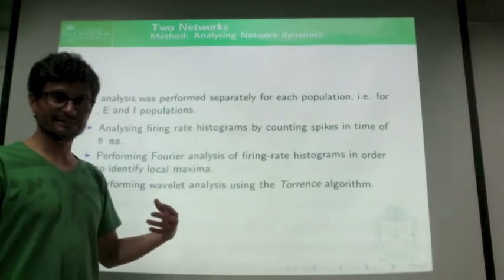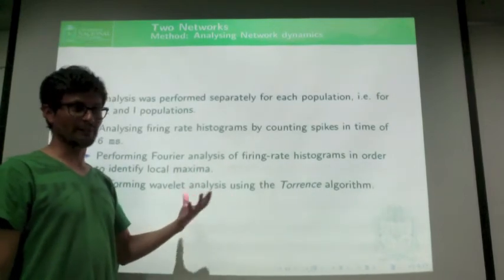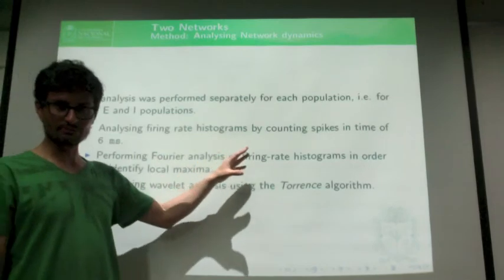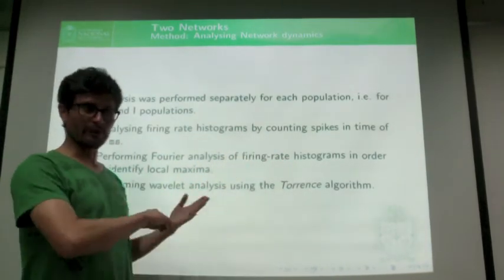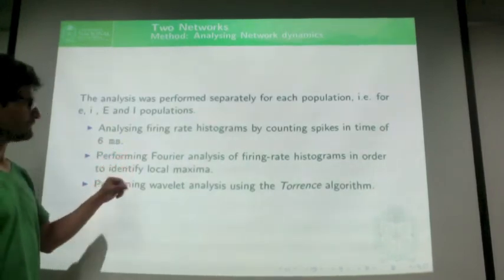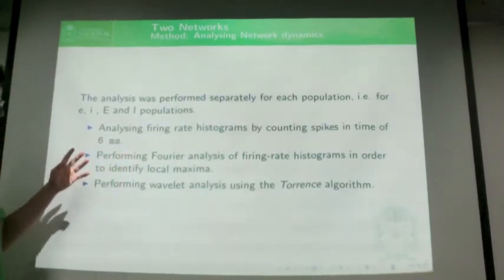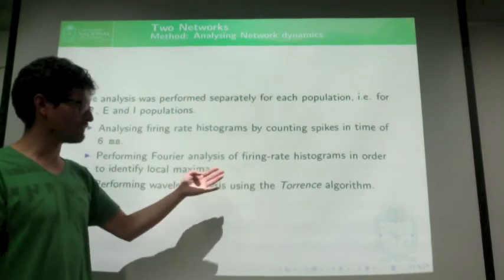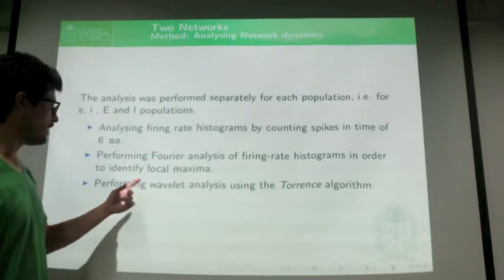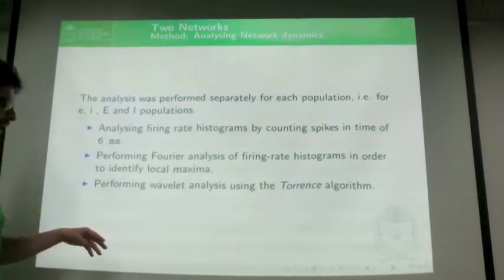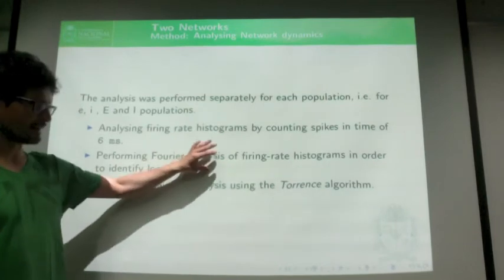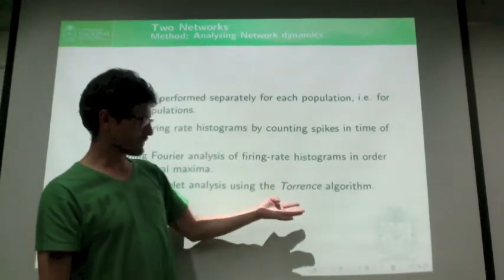For the analysis of results, they first use a firing rate histogram for counting spikes over time with a bin of six milliseconds. Second, they perform a Fourier analysis of the firing rate histograms to measure the amplitude of each network. Finally, they perform a wavelet analysis over the Fourier analysis using Torrence's algorithm.